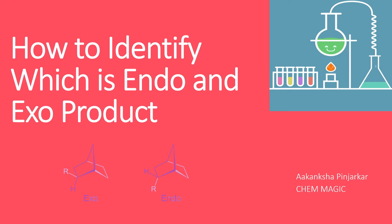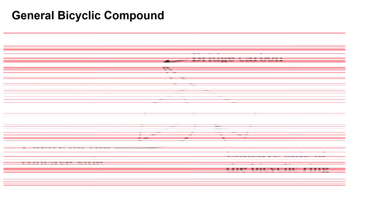I will tell you how to distinguish them by knowing just some concepts. Knowing about the general bicyclic compound — this is a general bicyclic compound, this is the bridge carbon atom, this is the cavity, this is the convex side of the bicyclic compound, and this is the cavity on the convex side. The substituent attached to this bicyclic compound determines which isomer is the endo isomer and which is the exo isomer. Now let us learn about which isomer is endo and which is exo.